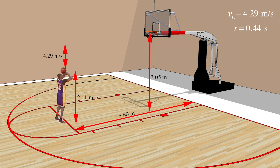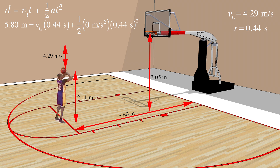Now we can use the second equation to find the horizontal velocity of the ball. Let's plug in our values. After solving, we come to the conclusion that the horizontal velocity is equal to 13.18 meters per second.